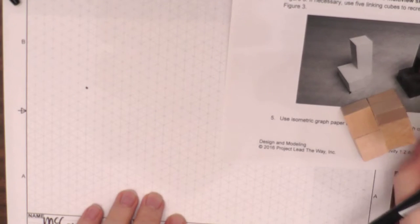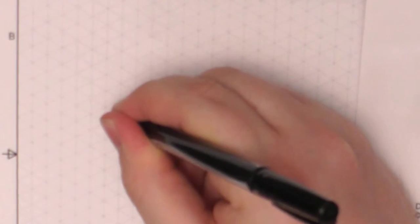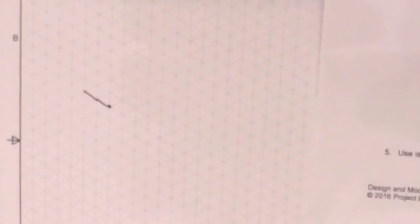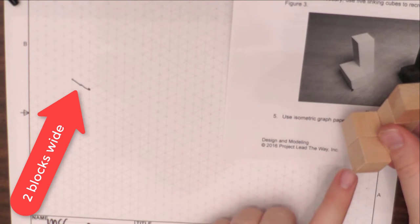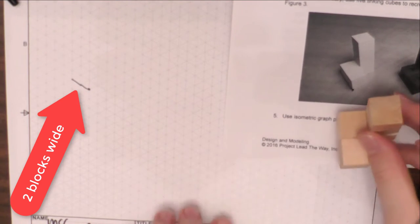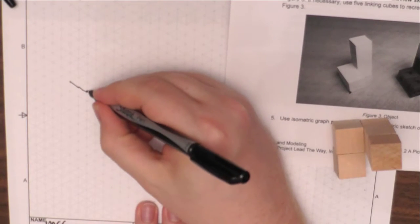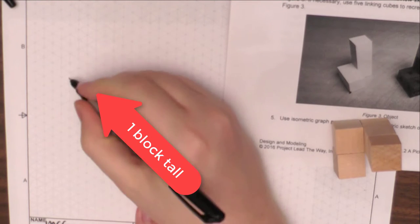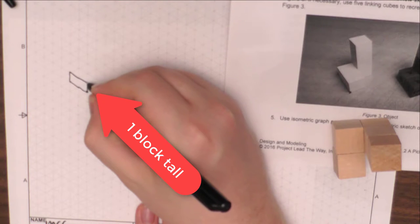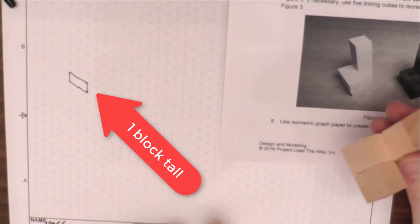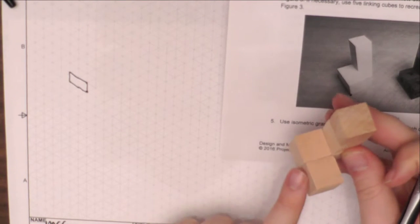So I go ahead and count it one, two. Alright, how tall is it? Look here. From here to there is one. From here to there is one. So I go up one on each side and then I connect them. I've now done this front face right here.